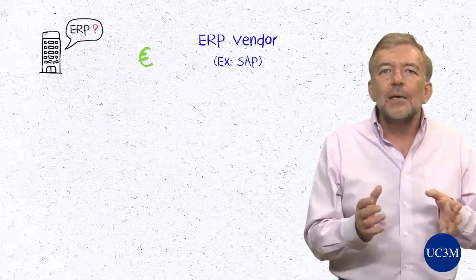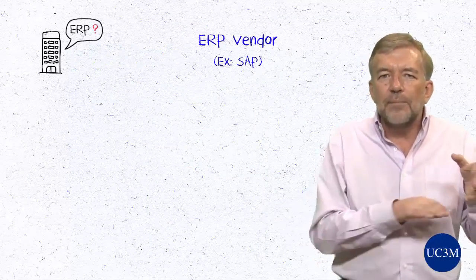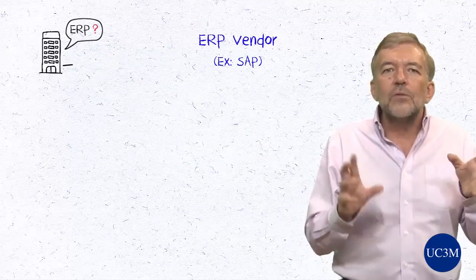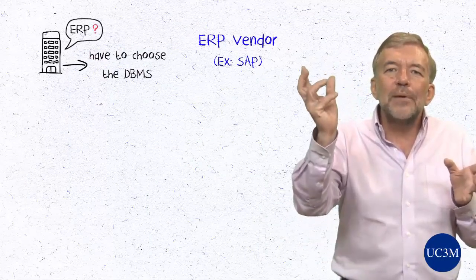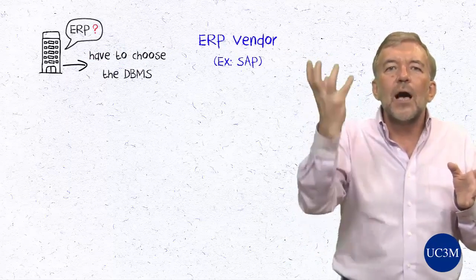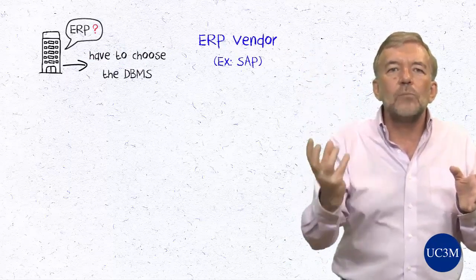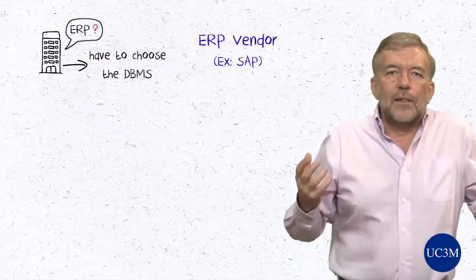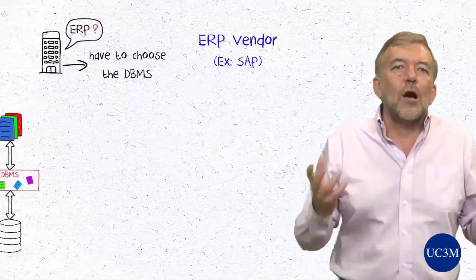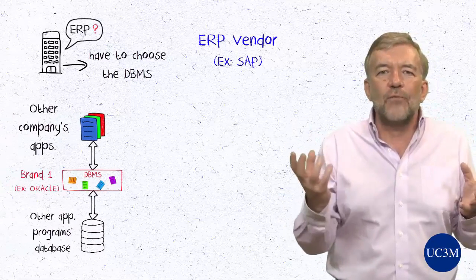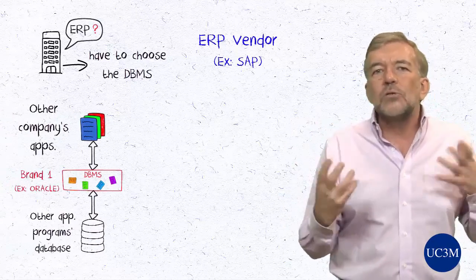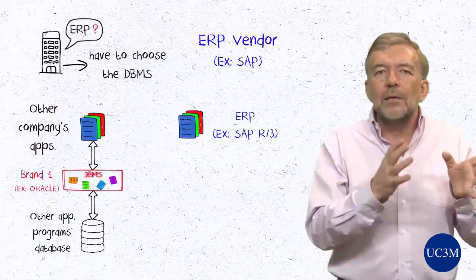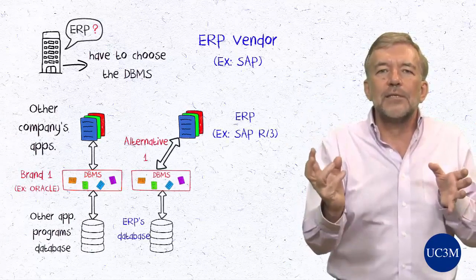Thus, if a company wants to buy and install an SAP ERP license, besides selecting the computing platform and operating system, it will have to choose the database management system it prefers among those supported by SAP. For example, if that company already uses the Oracle database management system for other applications, it might choose to run SAP using that same database management system.